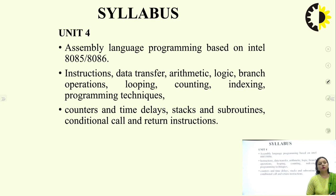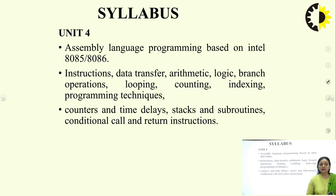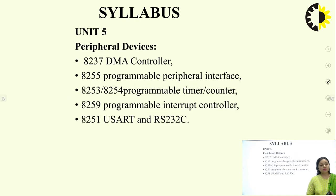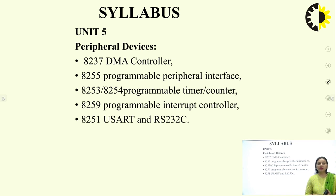Unit 4 covers programming concepts based on 8085 and 8086, including data transfer, arithmetic, logical, branching, looping, counting, indexing, counter and time delay, stack and subroutine, conditional call, and return instructions. Unit 5 discusses peripheral devices: 8237 DMA controller, 8255 programmable peripheral interface, 8253/8254 programmable timer counter, 8259 programmable interrupt controller, and 8251 USART and RS232.